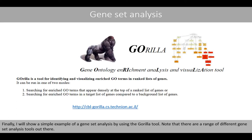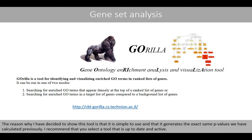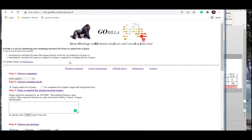Finally, I will show a simple example of gene set analysis using the Gorilla tool. Note that there are a range of different gene set analysis tools available. The reason I chose this tool is that it's simple to use and generates the exact same p-values we calculated previously. I recommend that you select a tool that is up-to-date and active. Once you have entered this page, you follow three steps, where the first step is to select a relevant organism, and then select whether to run gene set enrichment analysis with one ranked list, or gene set analysis based on Fisher's test with two lists of genes. Let's try Fisher's exact test first.